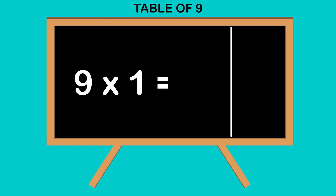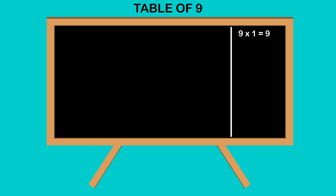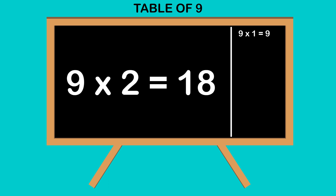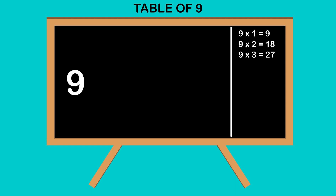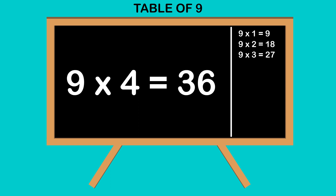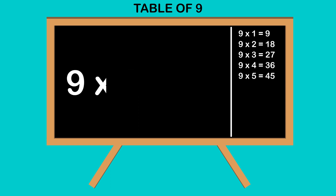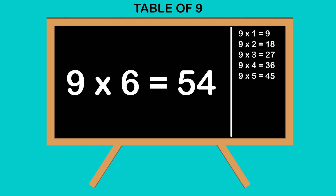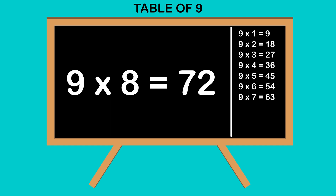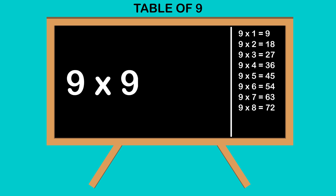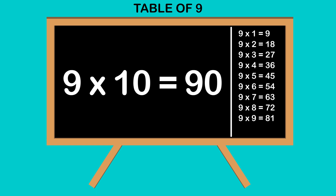Table of 9. 9 1's are 9, 9 2's are 18, 9 3's are 27, 9 4's are 36, 9 5's are 45, 9 6's are 54, 9 7's are 63, 9 8's are 72, 9 9's are 81, 9 10's are 90.